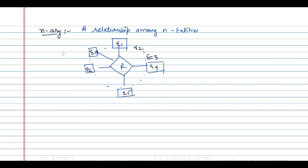Now there are two types of constraints we can apply on these entities: number one is the key constraint, and second is the participation constraint. Then we will study cardinality ratio — with these, we will see what is a one-to-one relationship, one-to-many, many-to-one, and many-to-many relationships. The next video will cover key constraints and participation constraints.